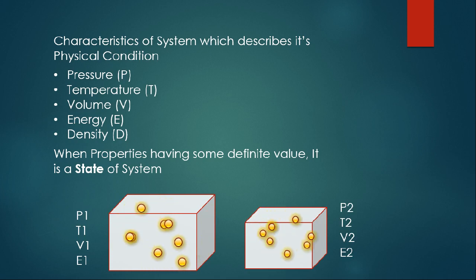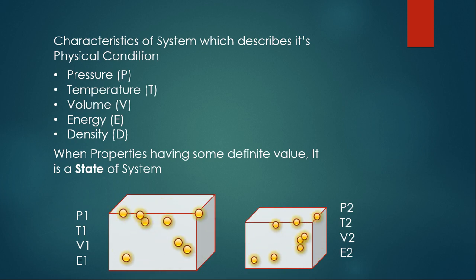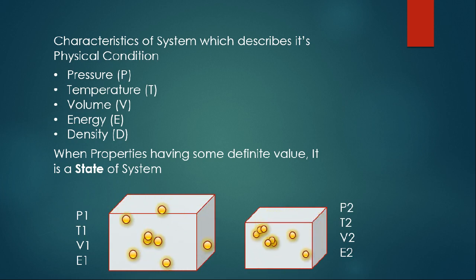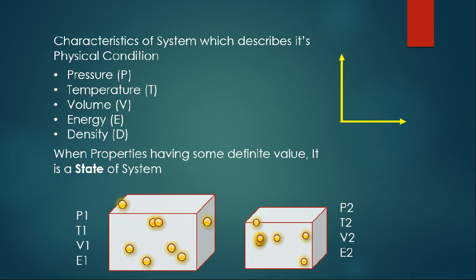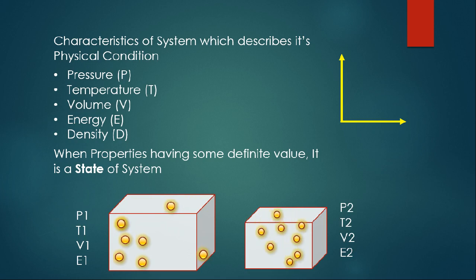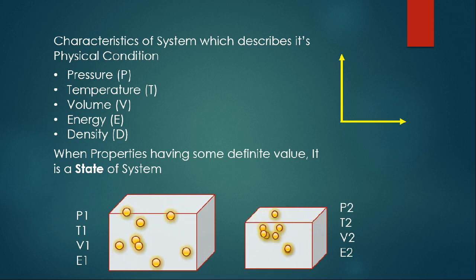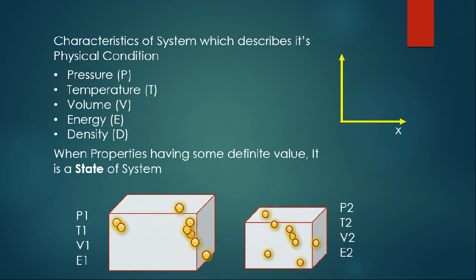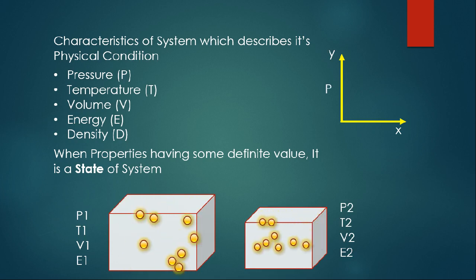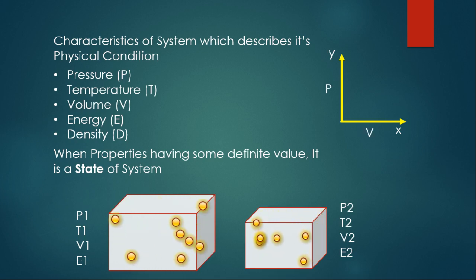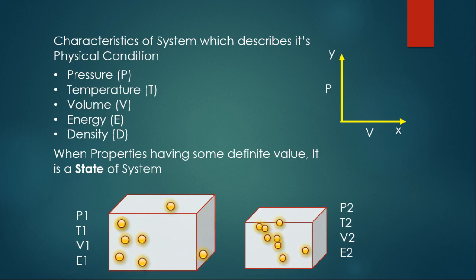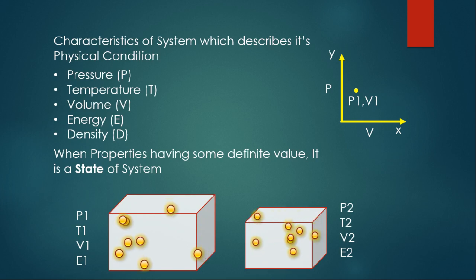The first figure shows one state and the second figure shows another state because the property values are different. We can represent the state of a system on a graph using properties. On the x-axis we write volume and on the y-axis we write pressure — this graph is called a PV diagram. The state P1, V1 means the pressure is P1 and the volume is V1.